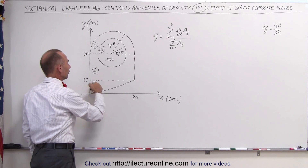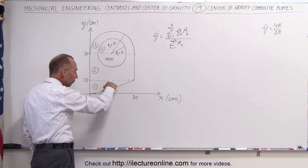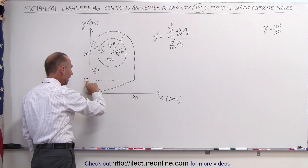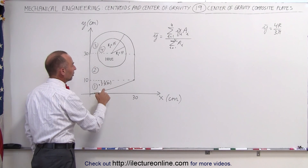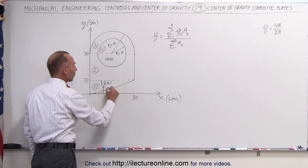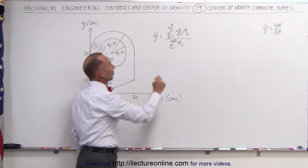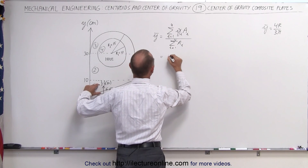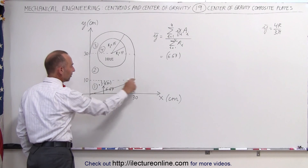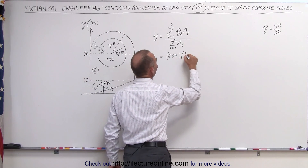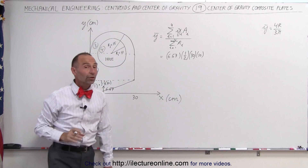The center of mass in the y-direction for the triangle — remember, it's always one-third the distance from the base to the height. If this is the base in the y-direction, we go one-third of the height of 10 cm, which is 3.33, meaning the y-coordinate is 6.67 cm. So that's 6.67 times the area of this triangle, which is one-half times the base (30) times the height (10).